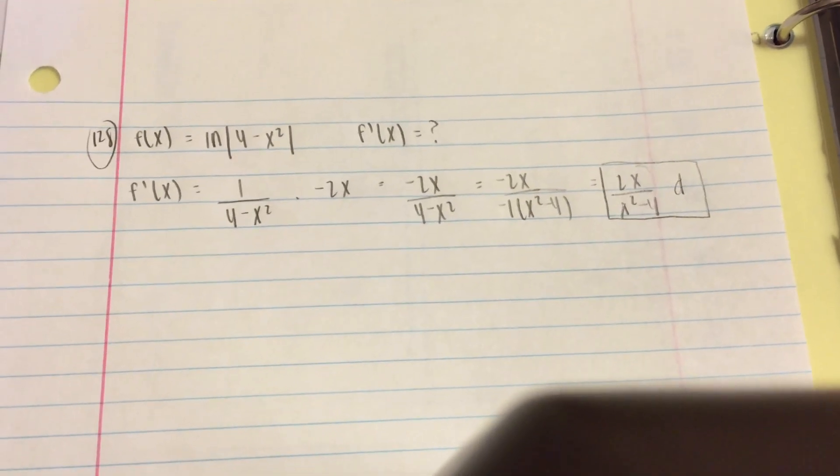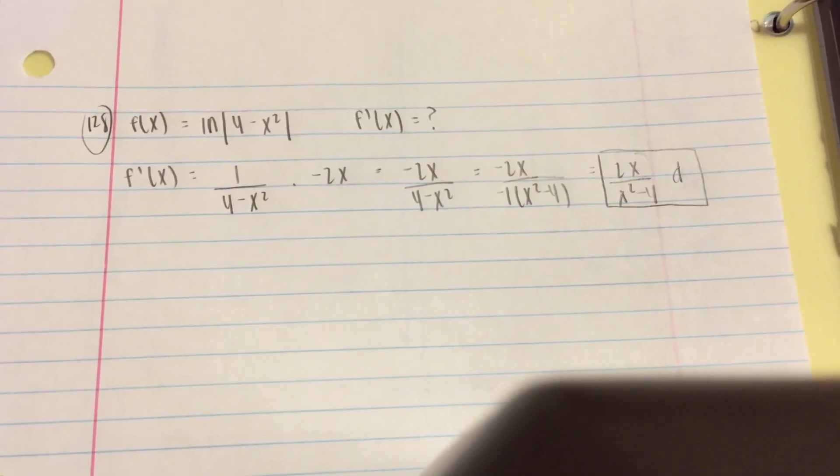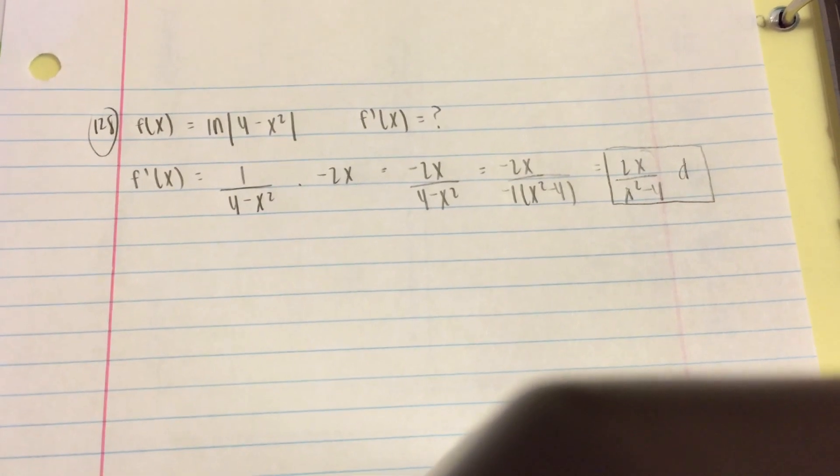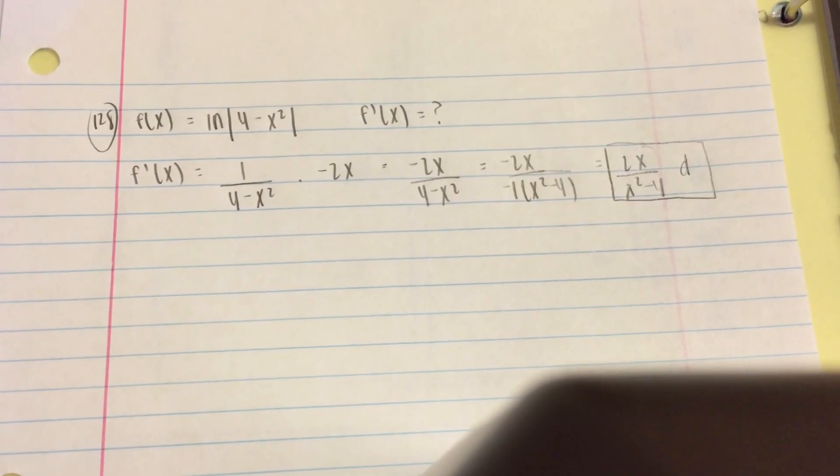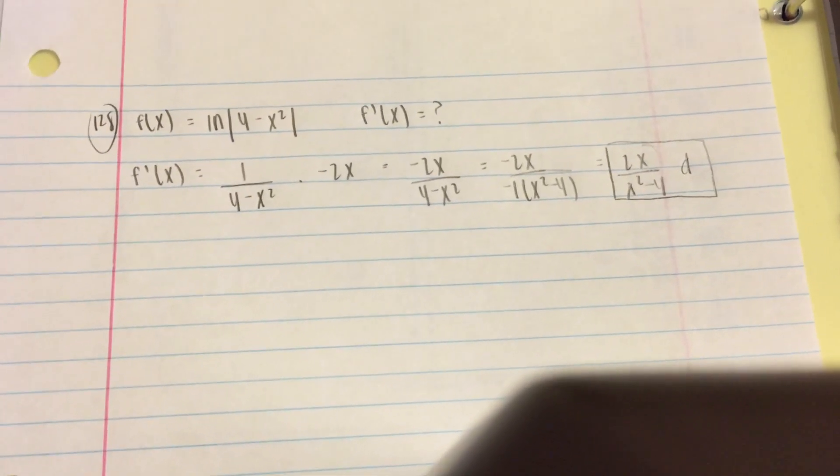This is CPM chapter 8, problem 128. This is a multiple choice problem and we are given f(x) = ln(4 - x²). We are trying to figure out what f'(x) equals.